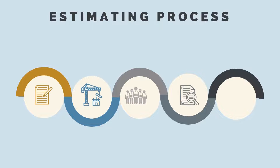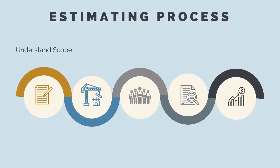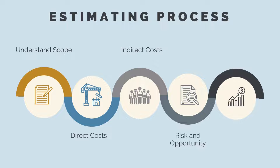At a high level, to produce a cost estimate, we first need to understand the project scope. We need to look at the drawings and specifications to understand specifically what we are being asked to price. Next, we'll calculate our direct costs — these are the costs to complete the physical construction works. Most work in a cost estimate is in calculating the direct costs. Then we calculate our indirect costs. We always calculate our direct costs first because these will influence our indirect costs, and our direct costs will be impacted by our understanding of the project scope. Next, we work out our contingency and finally add on our profit margin.